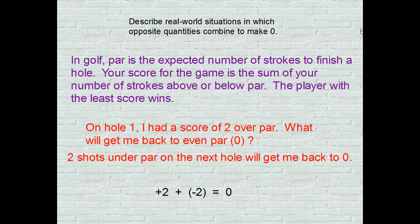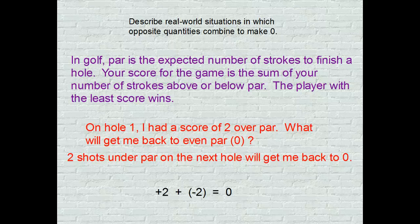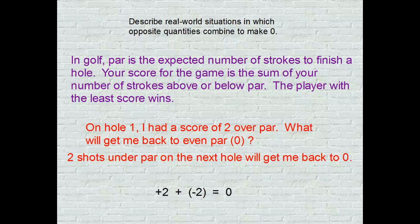I have a real world situation that we might be able to put this into effect. I'm going to read this problem out to you and I'm going to kind of describe a little bit about the game of golf. In golf par is the expected number of strokes to finish a hole. Your score for the game is the sum of your number of strokes above or below par. The player with the least score is actually the player that's going to win. So here's an example in red on hole one. Mr. Wurtz had a score of two over par. I'll just tell you that's pretty common for me. What will get me back to even par? How am I going to get back to zero? So I start on the first hole of my game of golf and I had two over zero.